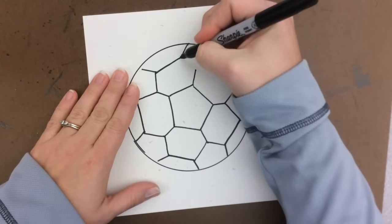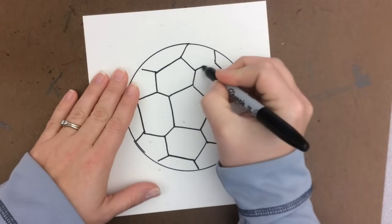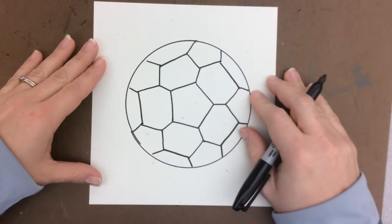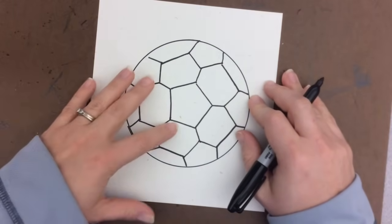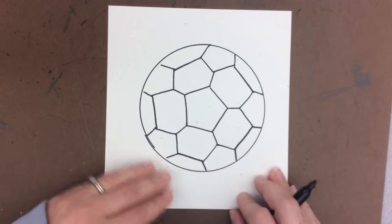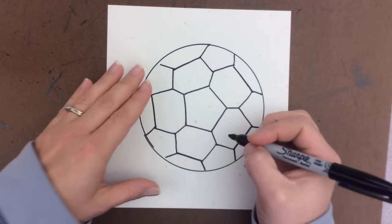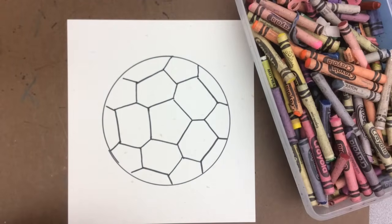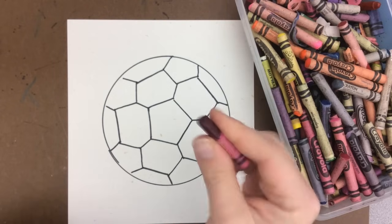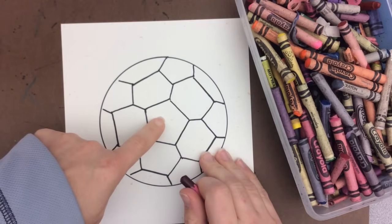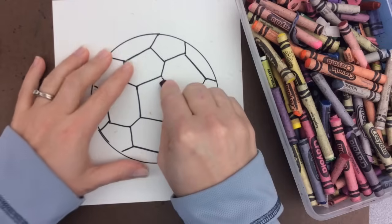Line up, letter Y. Now at this point, you can use crayons to color in some of the areas. Your soccer ball can be any color that you choose. I'm going to choose this red. We're going to start with the center pentagon that we drew first.